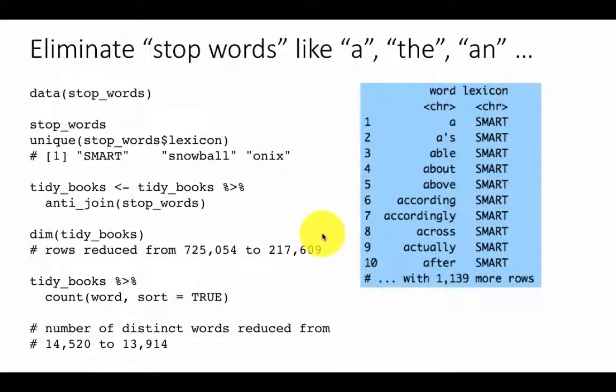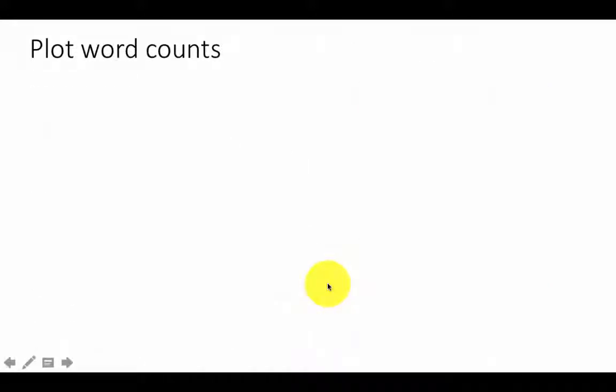So now that we have our data in tidy form, let's start flexing our muscles and doing some analysis. The first easy thing to do would be to plot the word counts, which is to produce a bar chart of how the words are used. So we're saying tidy_books, count the words, sort equals TRUE. And we already know that there are about 13,000 some number of words because tidy_books now is the filtered version where the stop words have been taken away. We're not going to be able to look at one bar chart with 13,000 words.